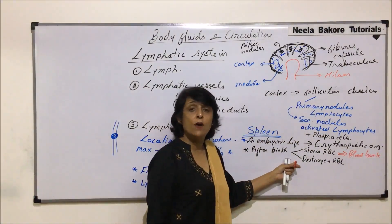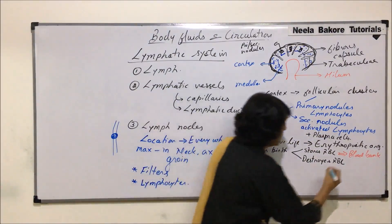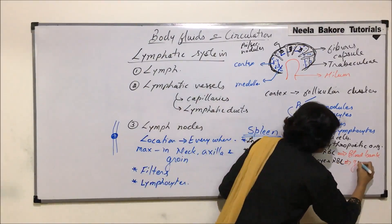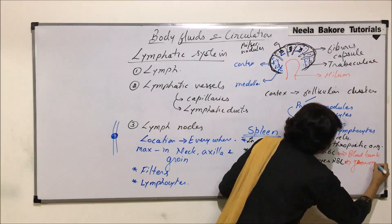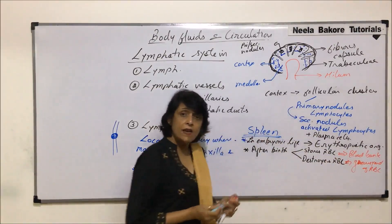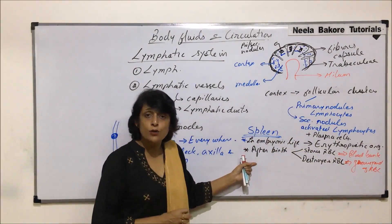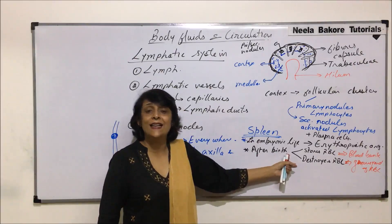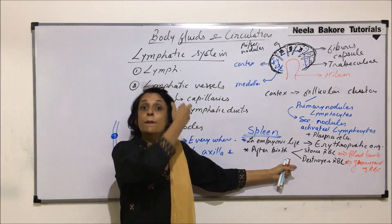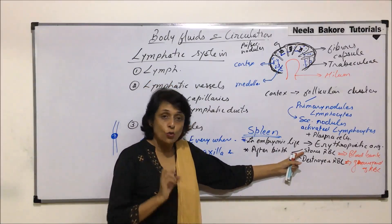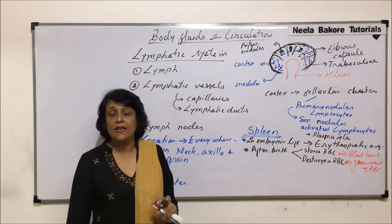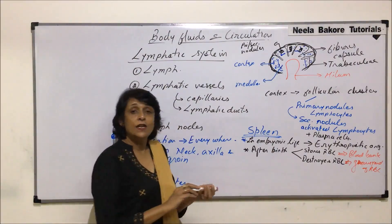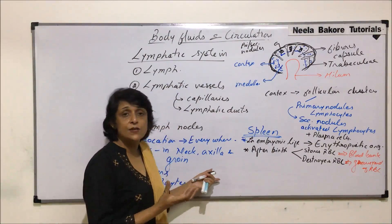Because the spleen stores RBCs, it is known as the blood bank of our body. And because it destroys old RBCs after they have completed their lifespan, it is also known as the graveyard of RBCs. So it is the same tissue acting as both a blood bank and a graveyard.